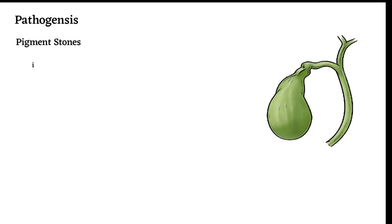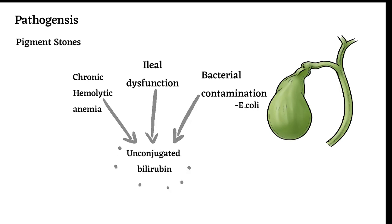Pigment gallstones are complex mixtures of insoluble calcium salts of unconjugated bilirubin and inorganic calcium salts. Chronic hemolytic anemia, severe ileal dysfunction, and bacterial contamination, especially of the biliary tree like E. coli, increase unconjugated bilirubin and stone formation.